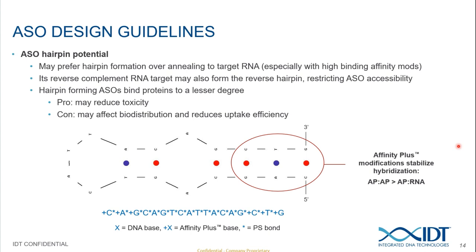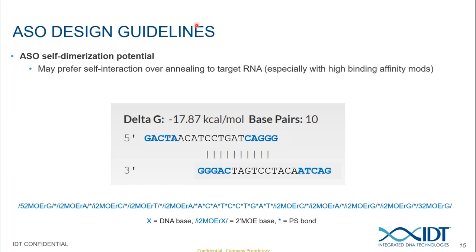Another biomolecular interaction to be cautious of is the ability of an ASO to form a self-dimer. This self-interaction can also be thermodynamically favorable enough to interfere with antisense hybridization, especially when high-binding modifications are incorporated, similar to hairpins. While no systematic studies have been published showing that self-dimerization negatively affects ASO potency, it should still be considered as a parameter when designing ASOs.